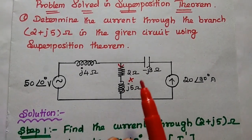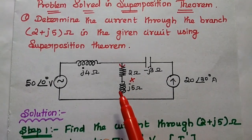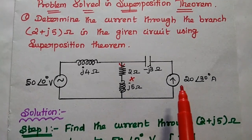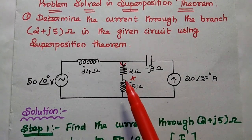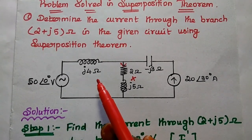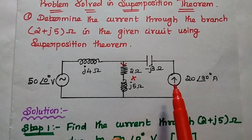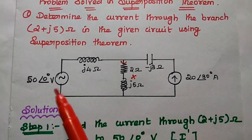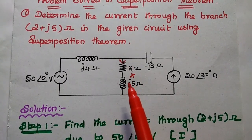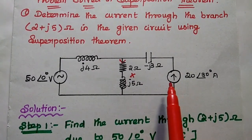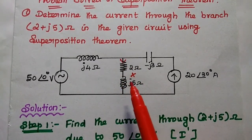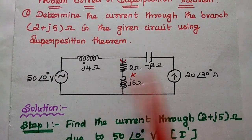In superposition theorem, the first step is to select only one source. At that time, the other source — here the current source — is open-circuited. Then we find the current through this branch due to the voltage source alone; that is I'. In the second step, we consider the current source alone, and the voltage source is short-circuited. We find the current flowing through this branch due to the current source — that is I''. Then we find the total current by adding I' and I''.